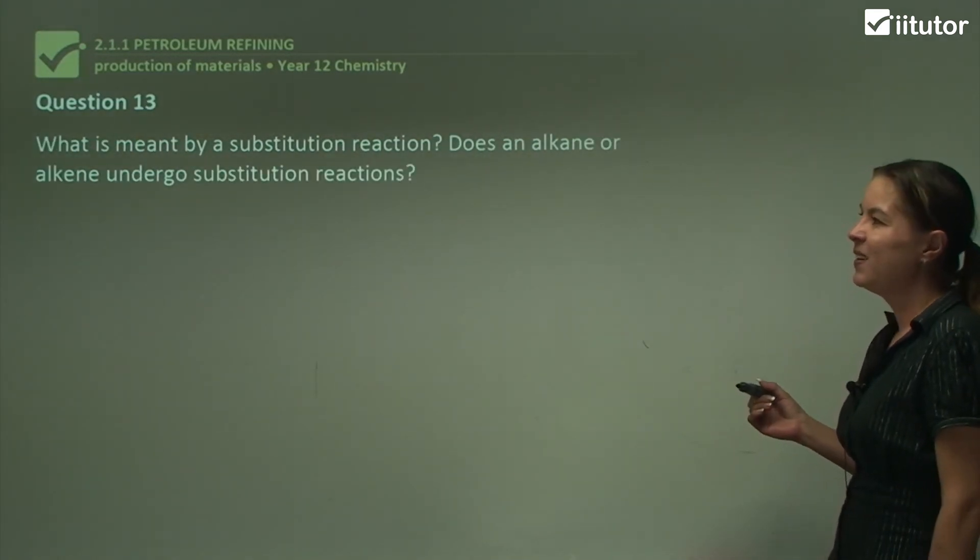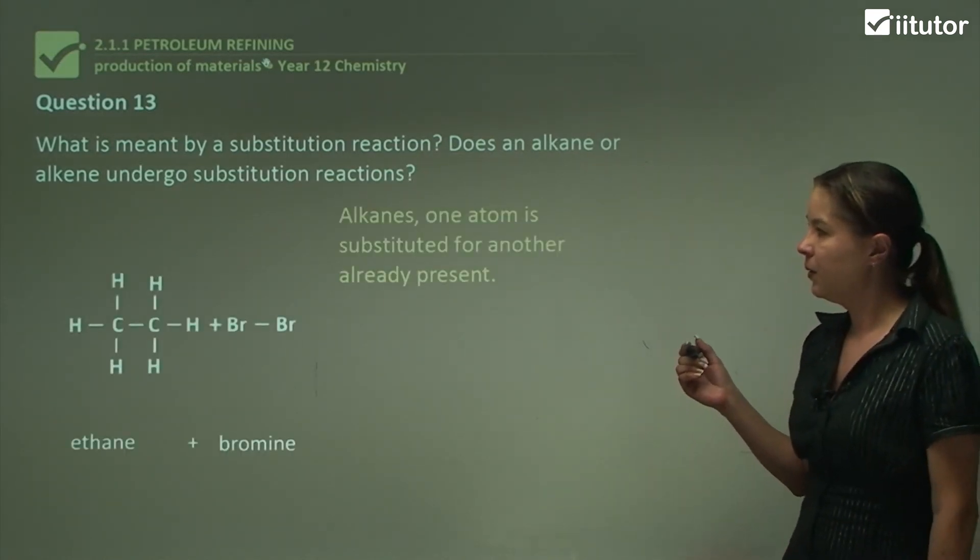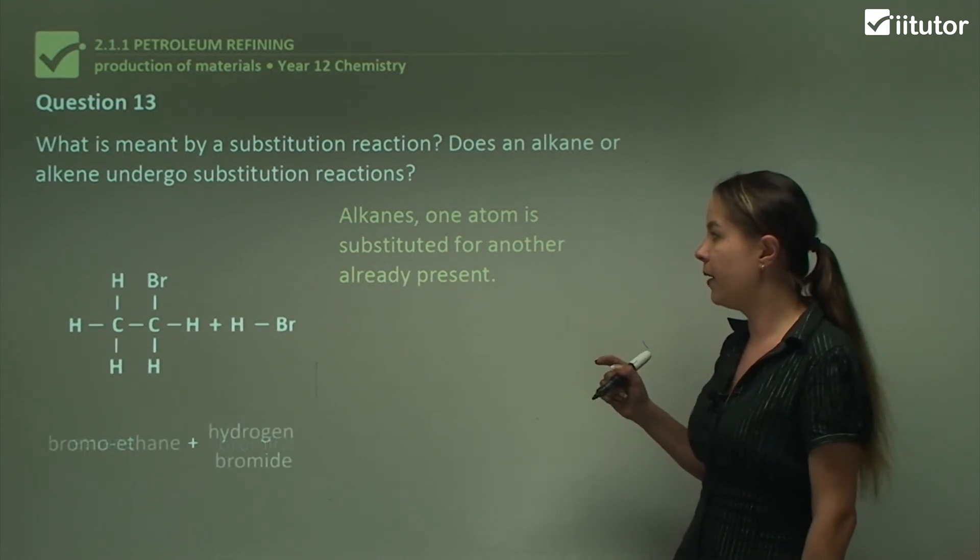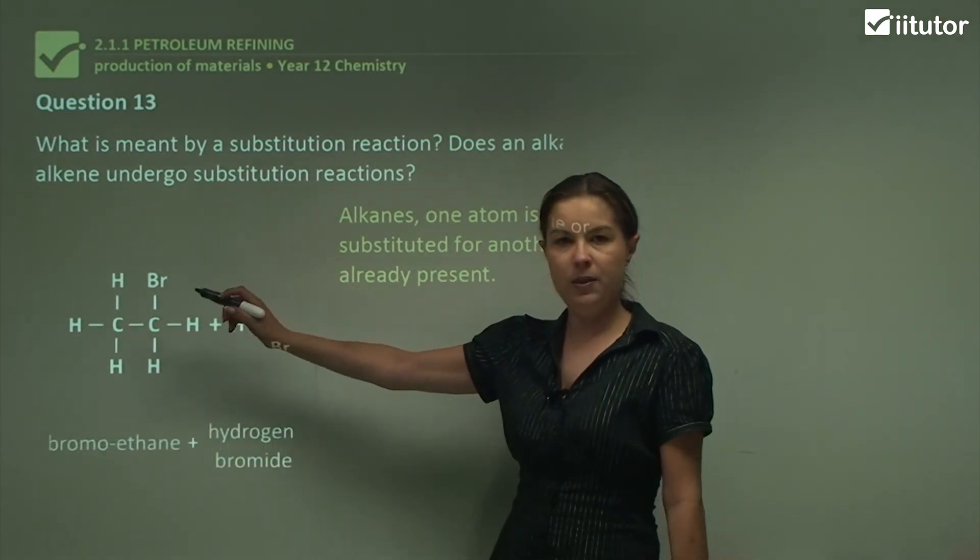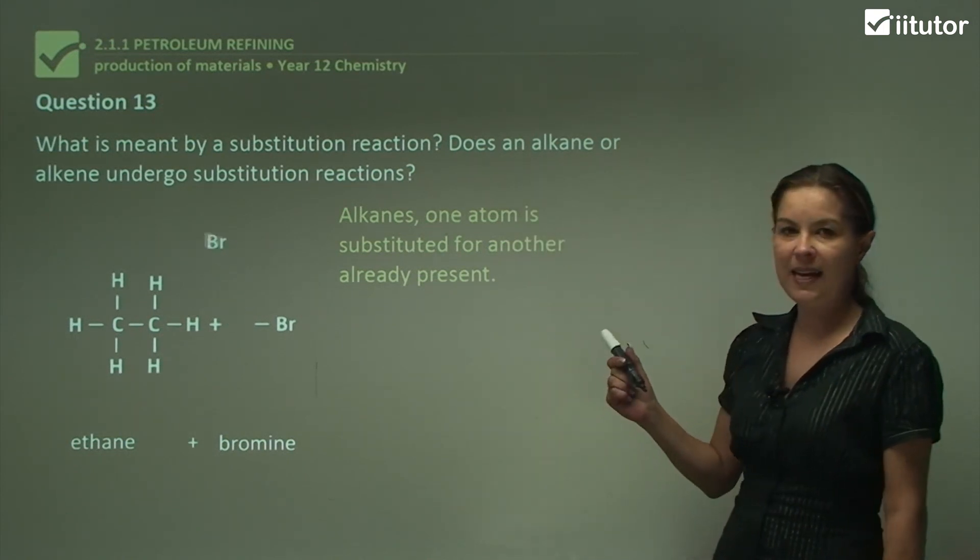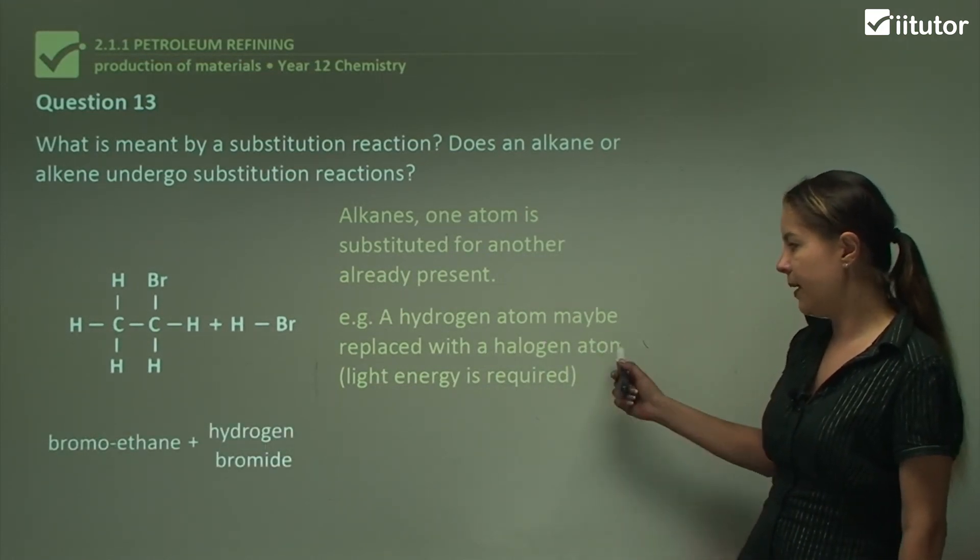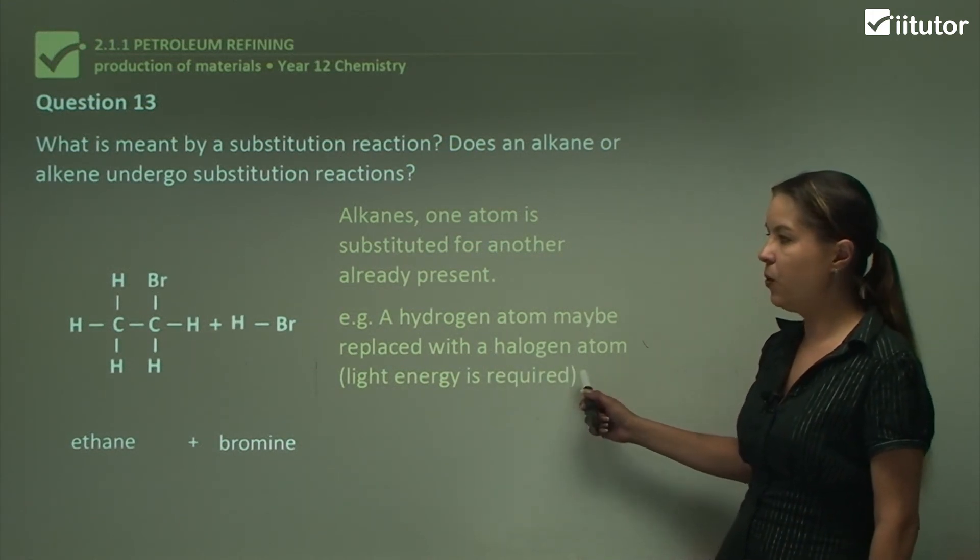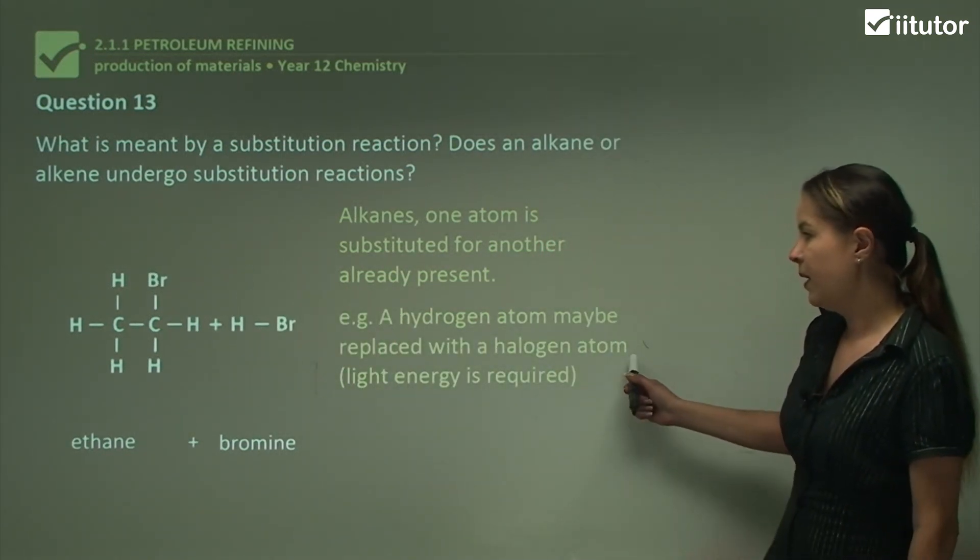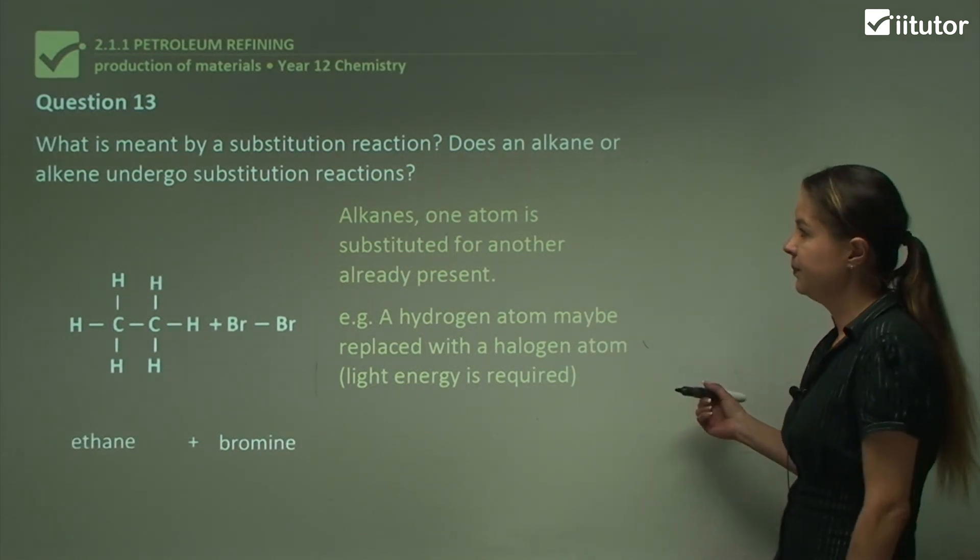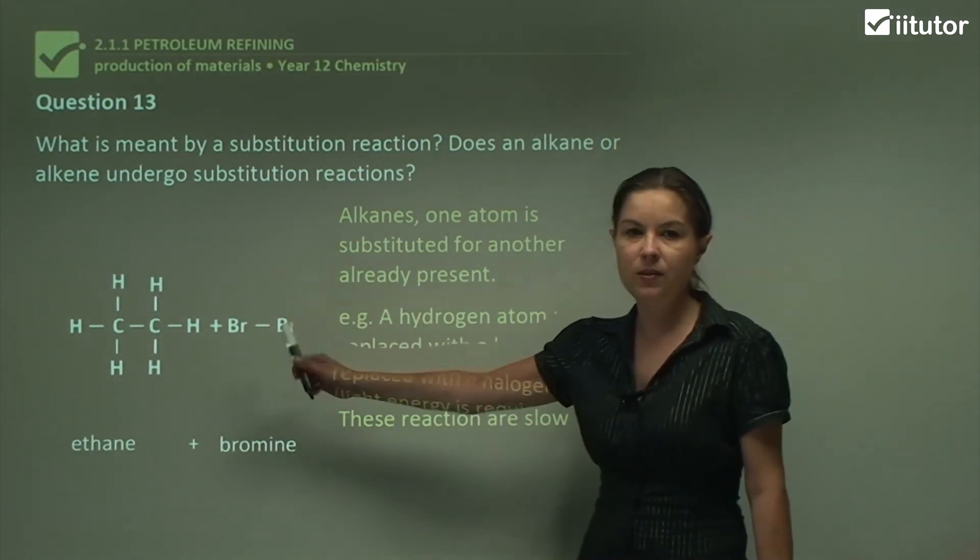Question 13, what is meant by a substitution reaction and does an alkane or an alkene undergo these reactions? Well, it's alkanes because one atom is substituted for another. It's not added, it's substituted. Remembering back to our diagram here with the bromine, the bromine comes in and a hydrogen comes off. So just remember that it's alkanes. For example, a hydrogen atom can be replaced with a halogen atom, but light energy in the form of UV energy is required. Just to recap, this could be a chloro group or a fluoro group. And substitution reactions are always with alkanes. And these reactions are slow. As I said before, we need UV light to get them moving along because alkanes are not very reactive.